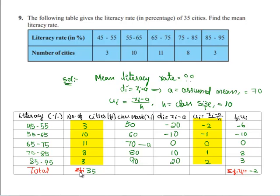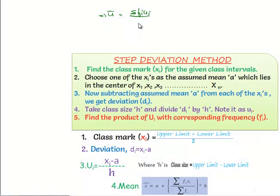Hence we have found sigma fi and sigma fi ui. We know that u bar is equal to sigma fi ui by sigma fi, and the relation is x bar is equal to a plus h into u bar.